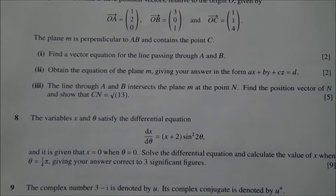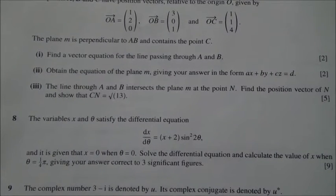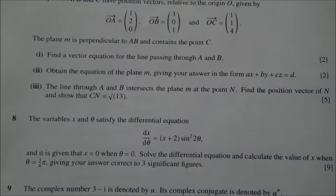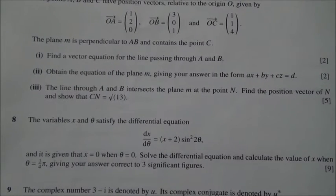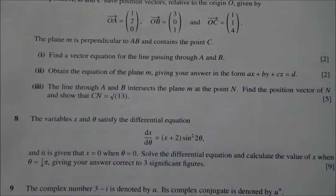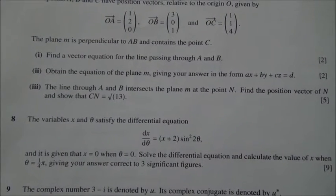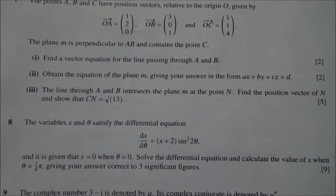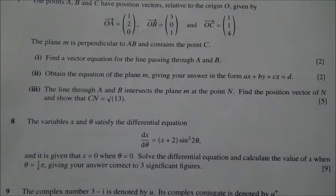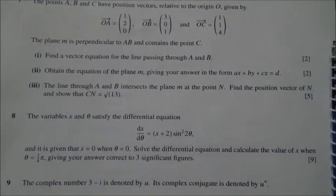The variables x and theta satisfy the differential equation dx over d theta equals x plus 2 times sine squared 2 theta. And it is given that x equals 0 when theta equals 0. Solve the differential equation and calculate the value of x when theta equals 1 quarter pi, giving your answer correct to three decimal places.